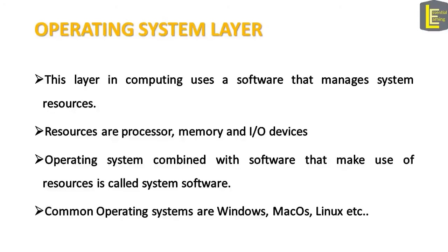The fourth layer in a computing system is the operating system layer. This layer uses a software that manages system resources — this software is called the operating system. Examples of resources can be the processor, memory, and I/O devices. The operating system combined with other softwares that make use of or manage resources are combined into one software called system software. Common operating systems in use are Windows, macOS, Linux, etc.